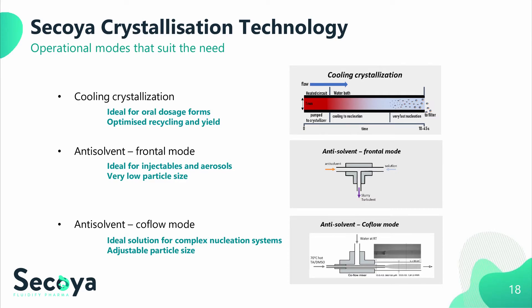This easy change between crystallization reactors is possible since at Sequoia three different crystallization modes have been developed in which we can perform nucleations. The simple cooling mode, which is typically suited for oral solid doses between 20 and 60 micrometers average size. The anti-solvent mode using frontal collision, which is ideal to reduce particle size down to a few micrometers. And finally, the anti-solvent mode in the co-flow setup for even more complex nucleation systems — for example, to avoid oiling out whenever the phase separation between the solute and the anti-solvent becomes much too intense.